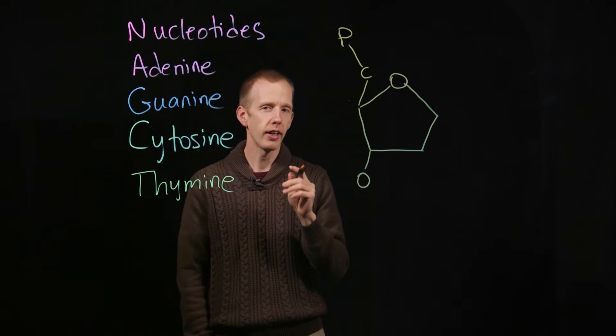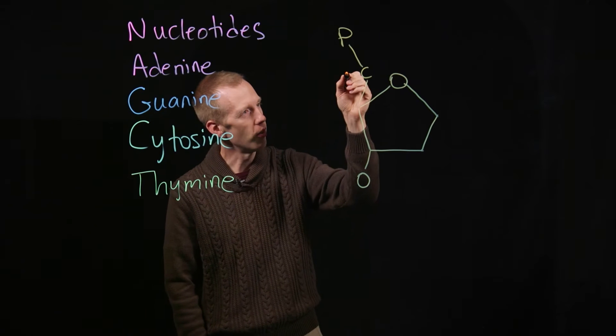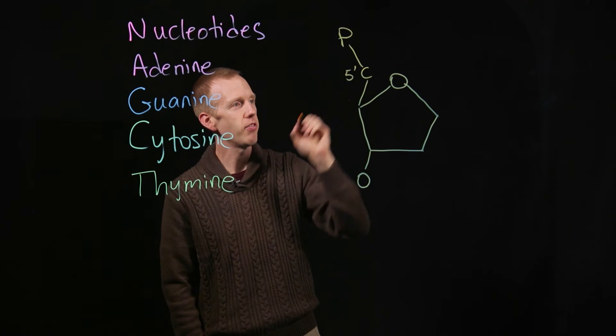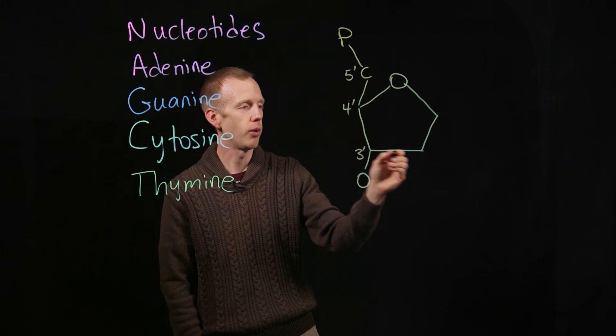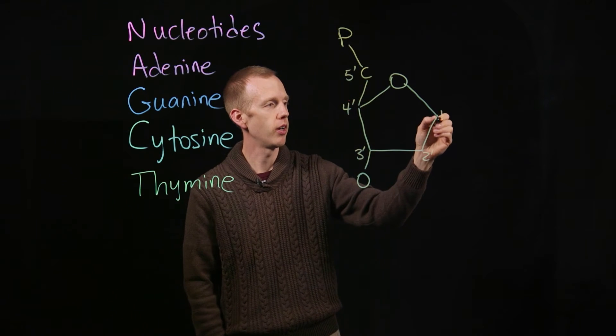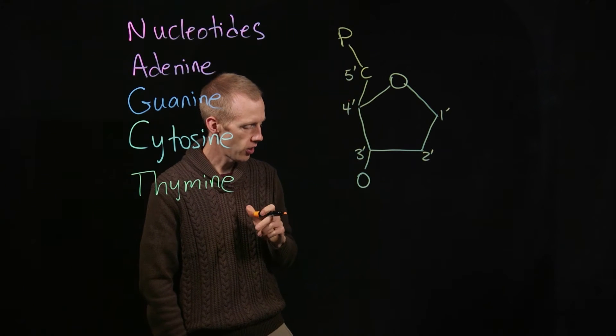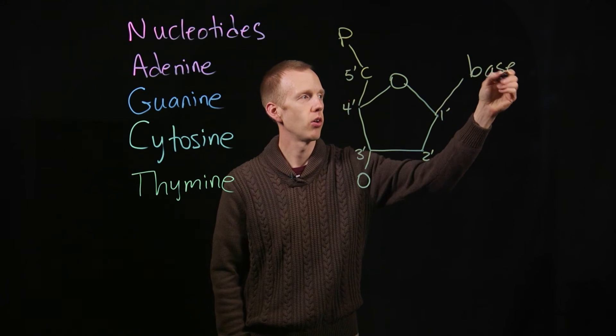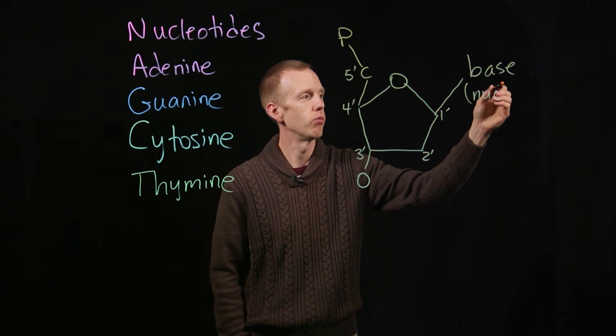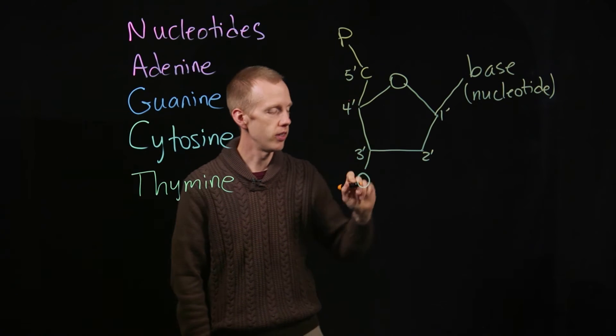And through organic chemistry, we know that there's a particular numbering of these carbon molecules, so that this carbon is called the five-prime carbon. There's the four-prime carbon, the three-prime carbon, the two-prime carbon, and the one-prime carbon. And it's off of the one-prime carbon where the base, or nucleotide ring, is located.